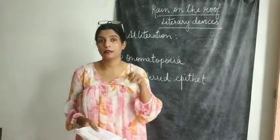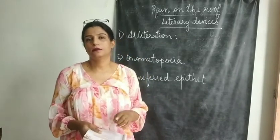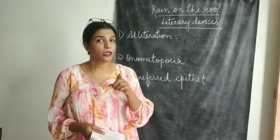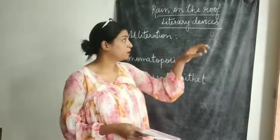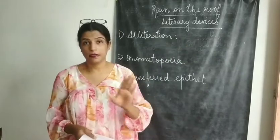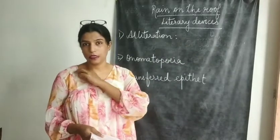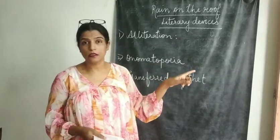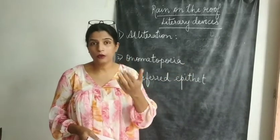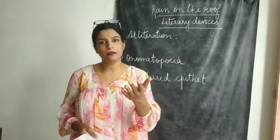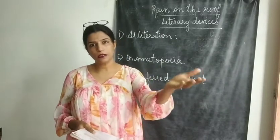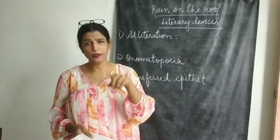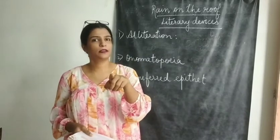You will cite from the poem only, from the text only. You will write which are the examples of these three literary devices which have been used. I will give you the explanation. You will mark for yourselves this in here. You will write the meaning of what these literary devices are, how these particular literary devices help the poet, and then you will write the examples from your poem.